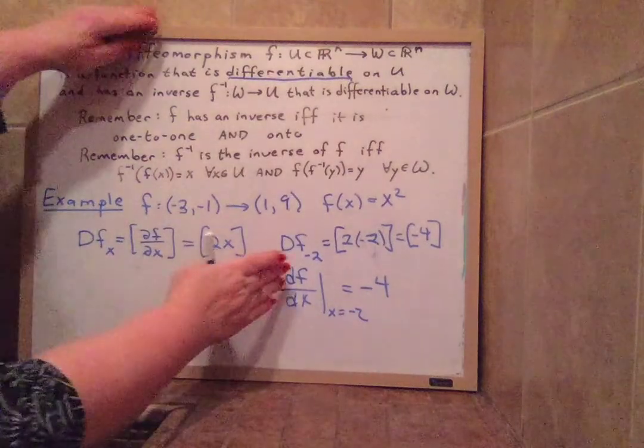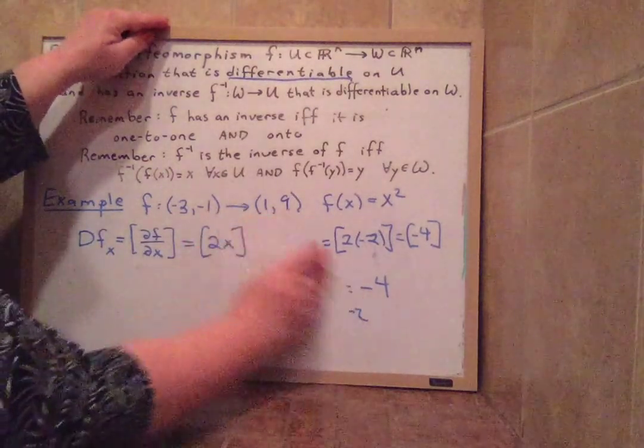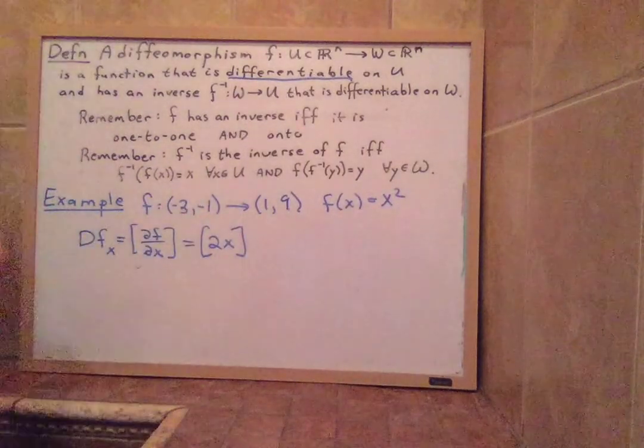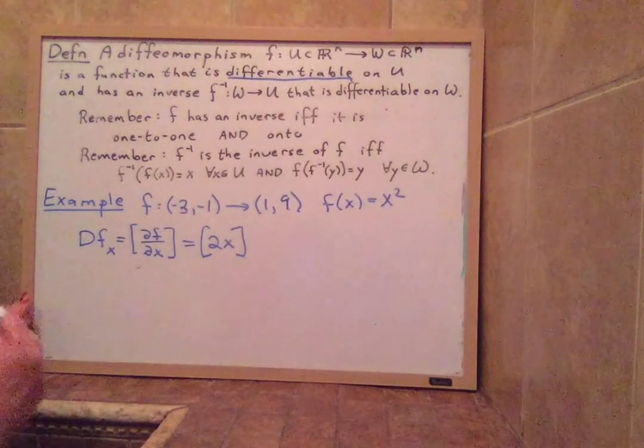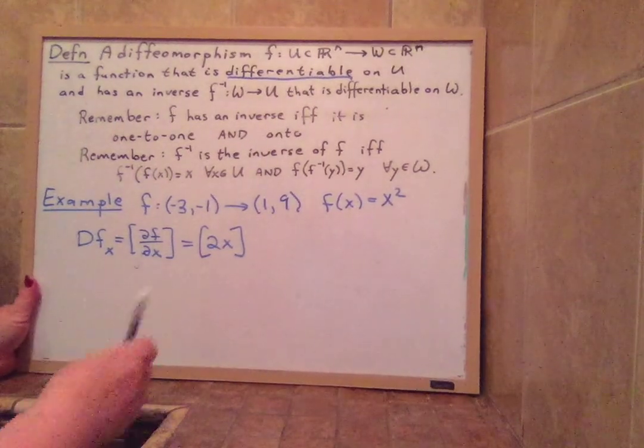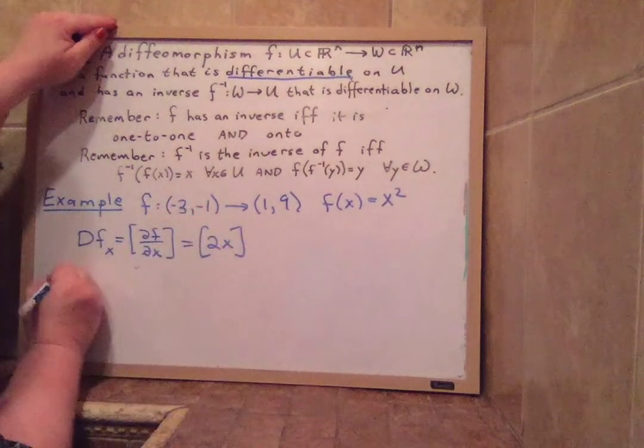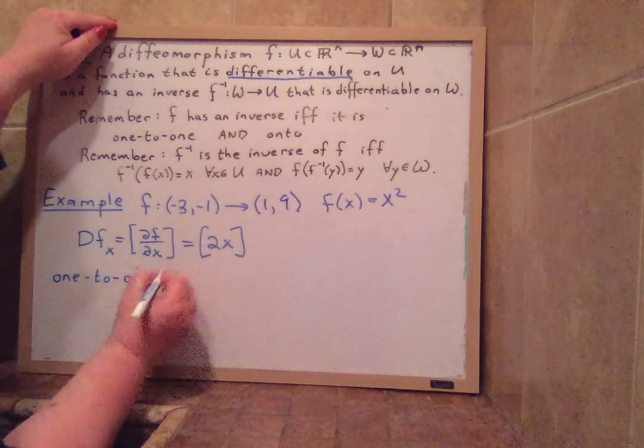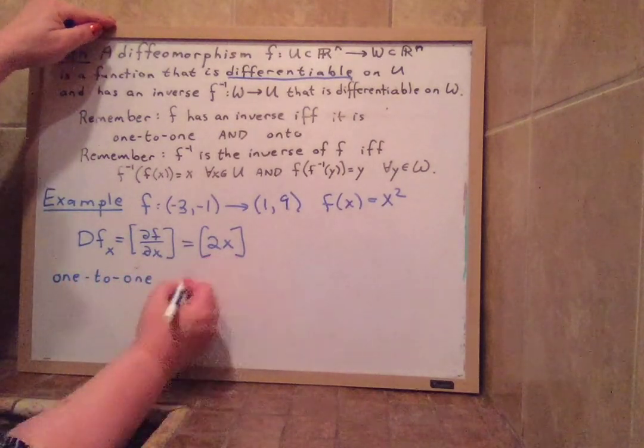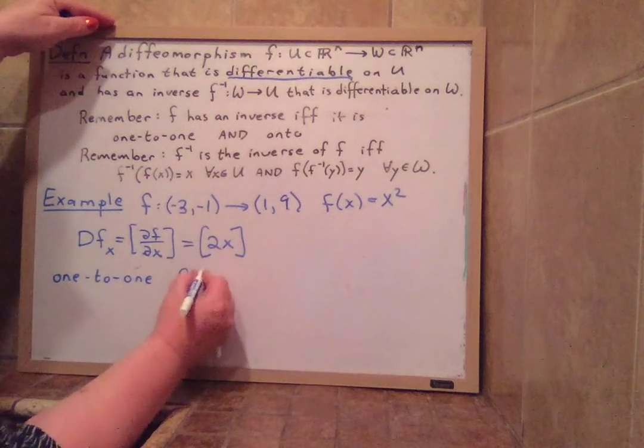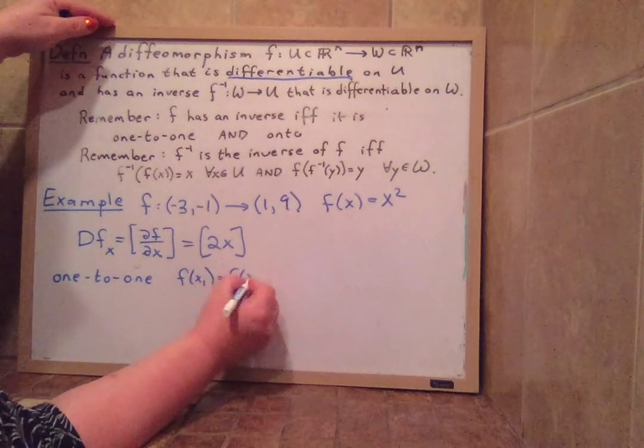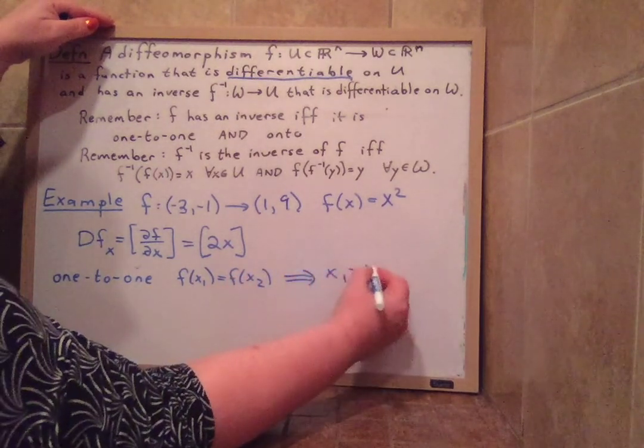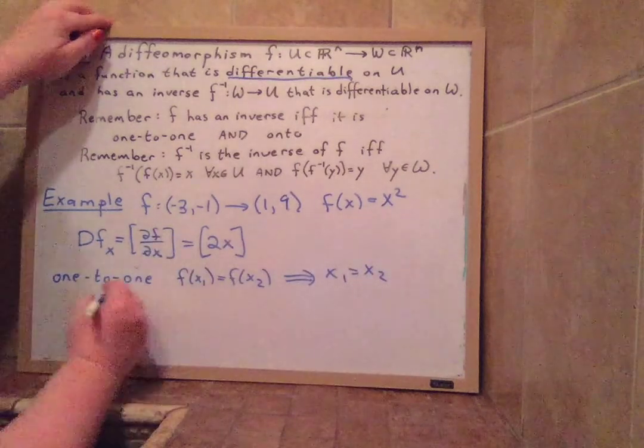Alright, so now we want to check, okay, we have that he's differentiable. So we're done checking he's differentiable. And the next thing to check is if he has an inverse. Now he needs to be one-to-one. So let's just double check that. One-to-one is asking if we have F at x1 equal to F at x2, does this imply x1 equals x2?